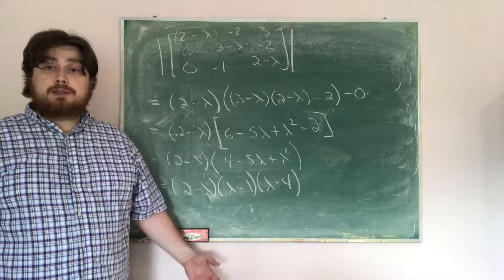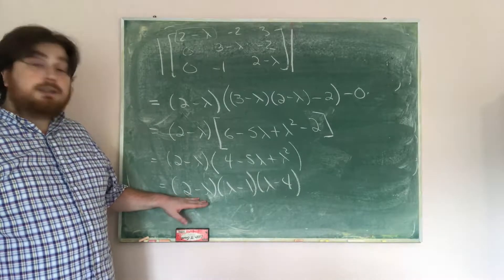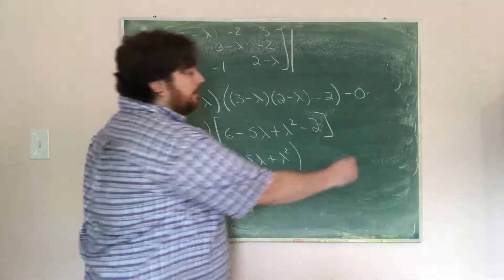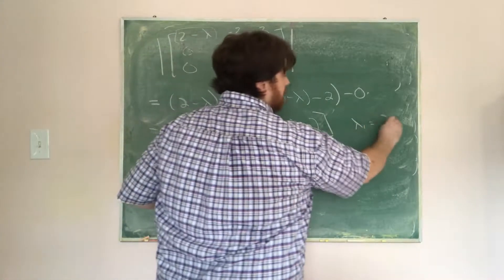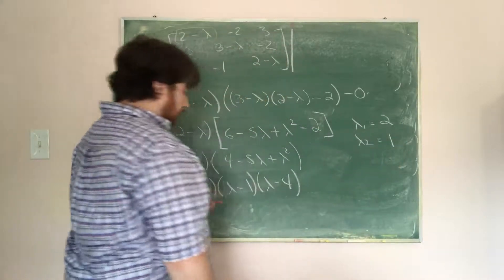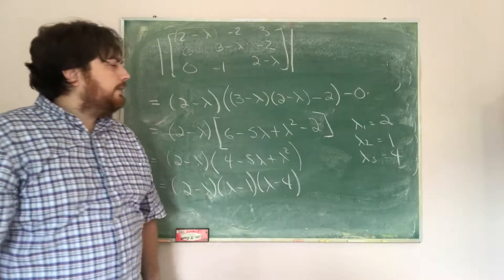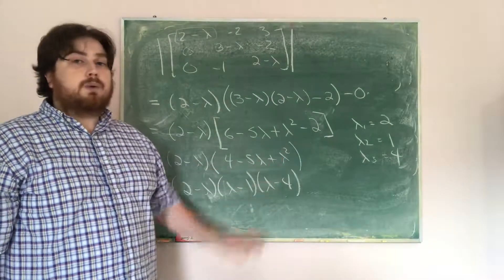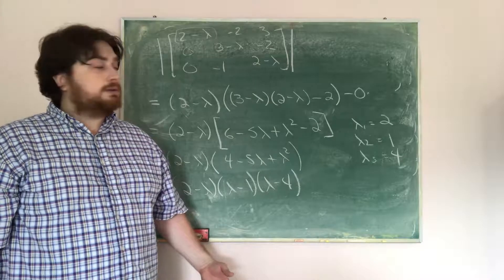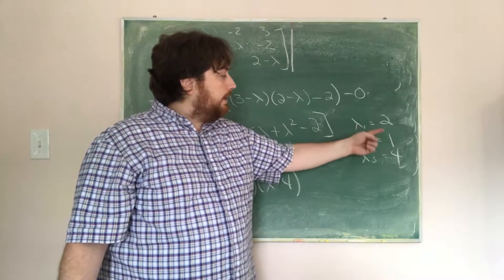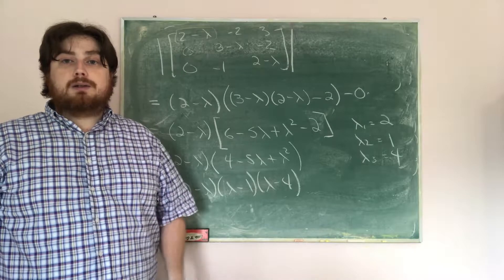Recall to find the eigenvalues, we set this equal to 0. So we get λ₁ = 2, λ₂ = 1, and λ₃ = 4. My three eigenvalues are 2, 1, and 4. If you want to change the order that's okay — you just have to keep track of the order you use.